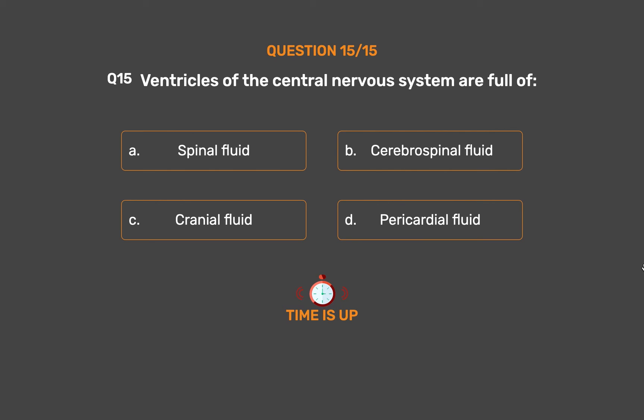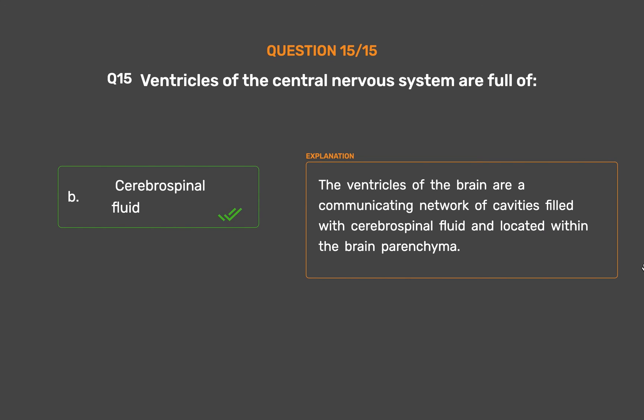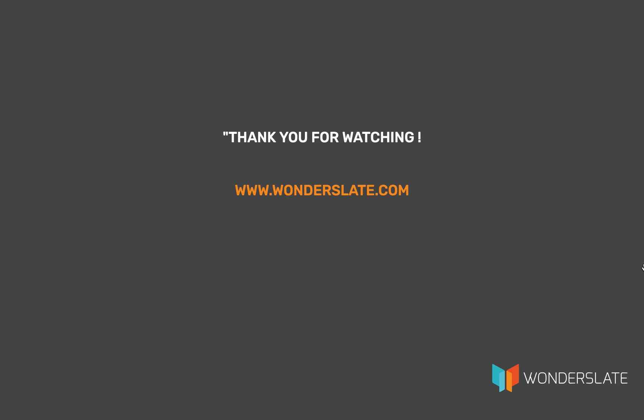The correct answer is Option B, Cerebrospinal fluid. The ventricles of the brain are a communicating network of cavities filled with cerebrospinal fluid and located within the brain parenchyma.